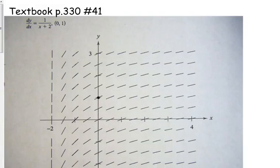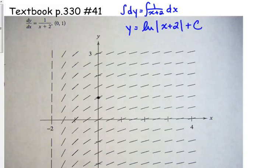One more problem that I want us to do. If we're going to solve this, we need to integrate dy is equal to 1 over x plus 2 dx. You should recognize that as a natural log problem. So the general solution is y is equal to the natural log of x plus 2 plus c. This slope field is representing all of those possibilities for plus c.